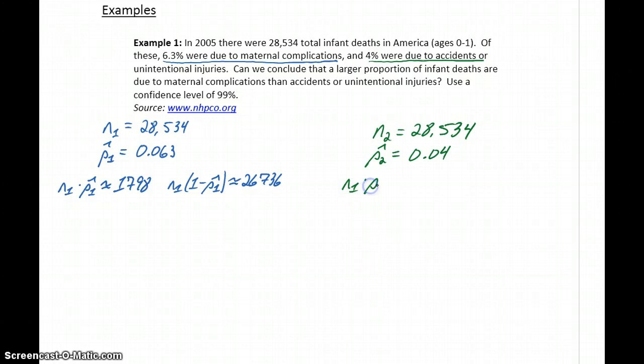Meaning that N2 times P2 hat will be approximately 1,141, and N2 times 1 minus P2 hat is approximately 27,393.